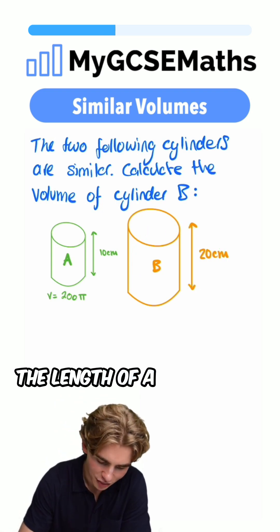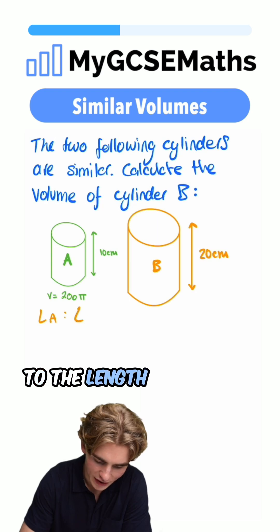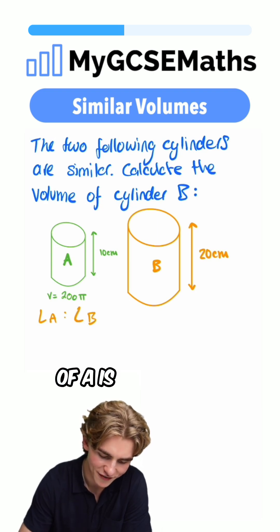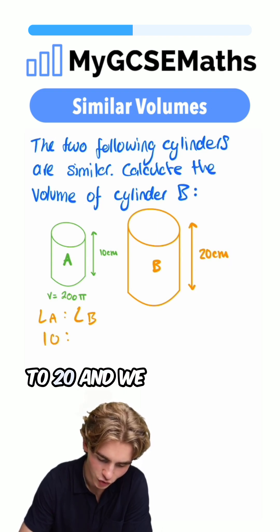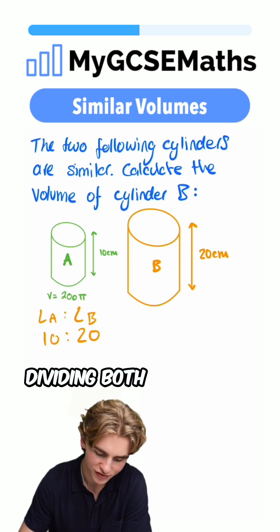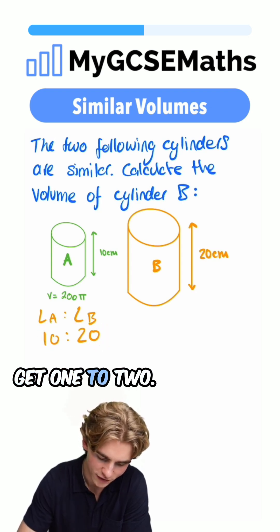So the ratio of the length of A to the length of B, what's it going to be? Well, the height of A is 10, the height of B is 20. So we can say it is 10 to 20, and we can simplify this ratio by dividing both sides by 10. We're going to get 1 to 2.